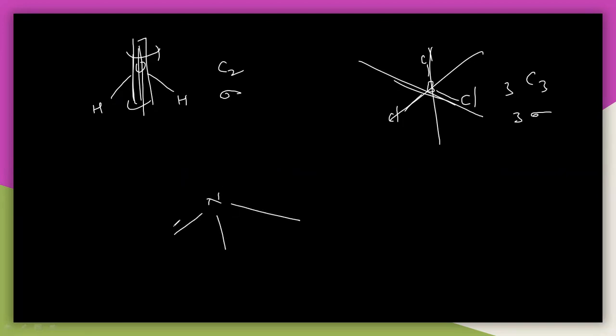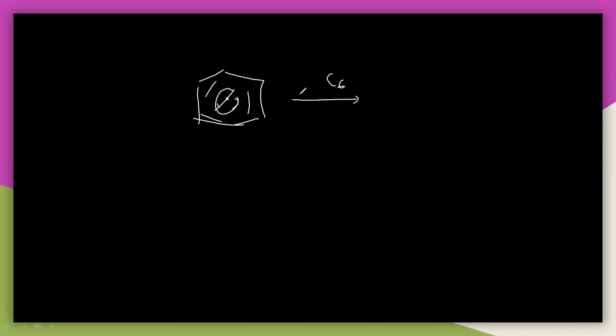NH3 is also a symmetric molecule. You can also take benzene — benzene is a symmetric molecule. It has a C6 axis, and rotating 60 degrees repeatedly gives the identical structure. So all these — water, BCl3, NH3, benzene — are symmetric molecules, having Cn, sigma, and Ci.